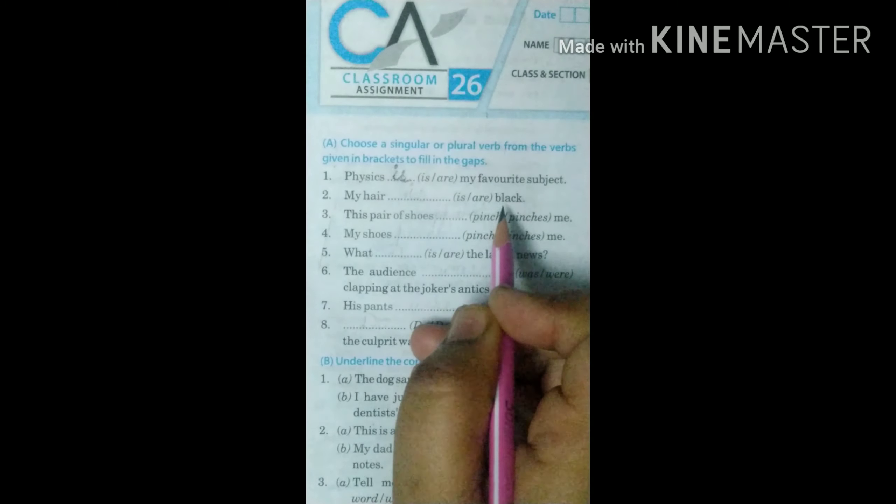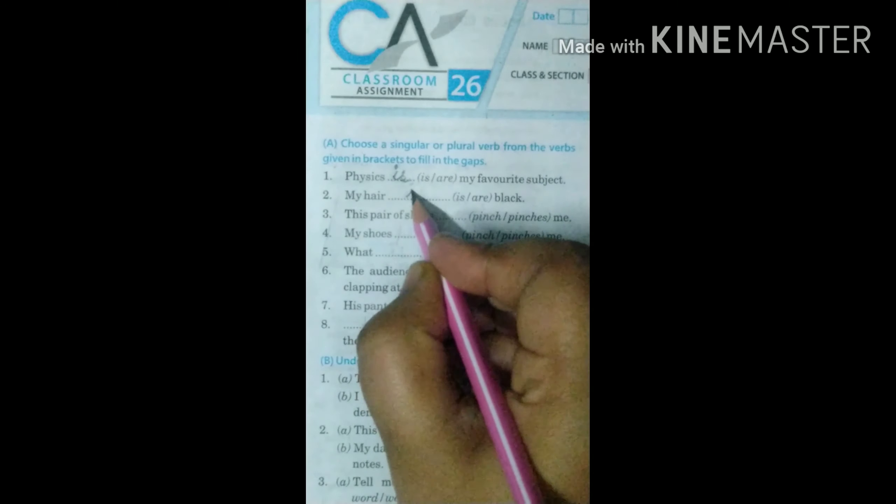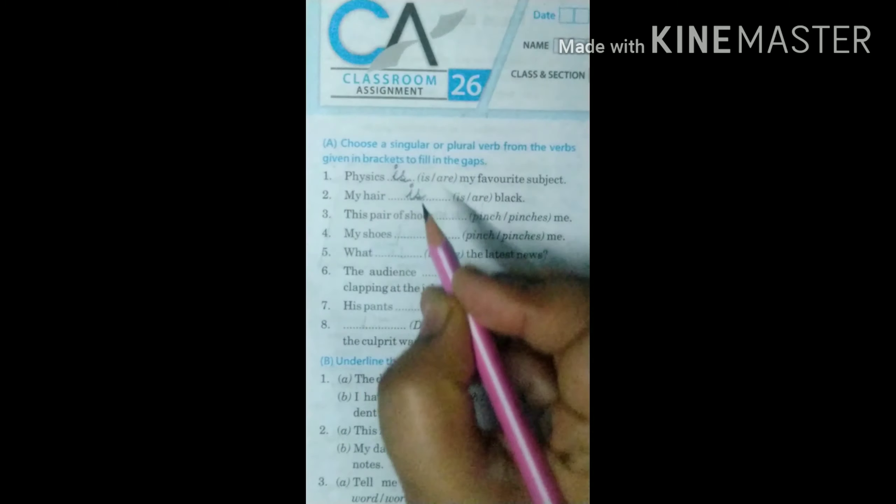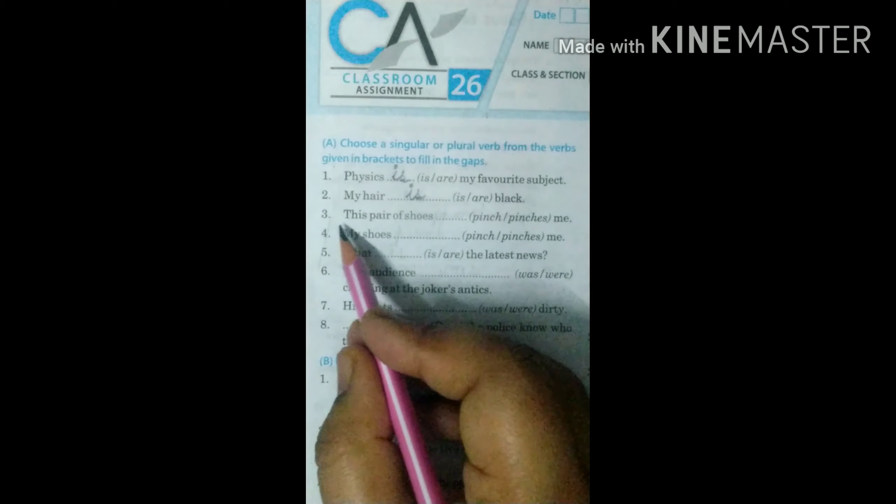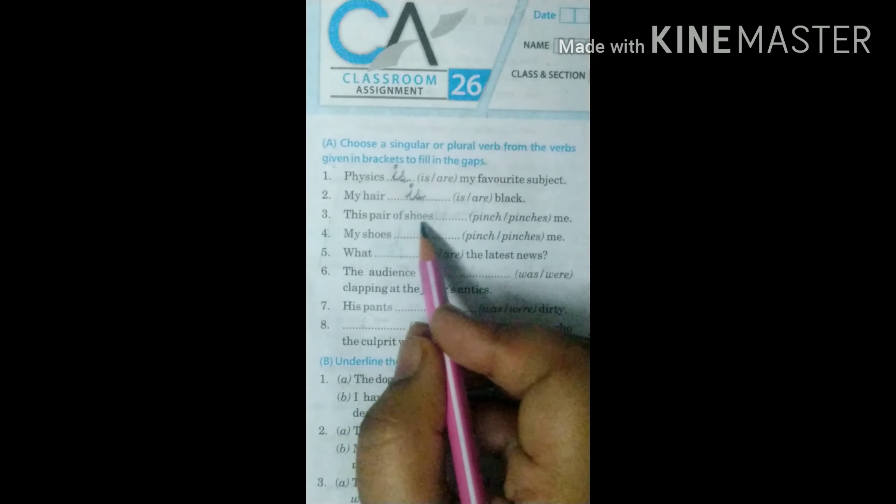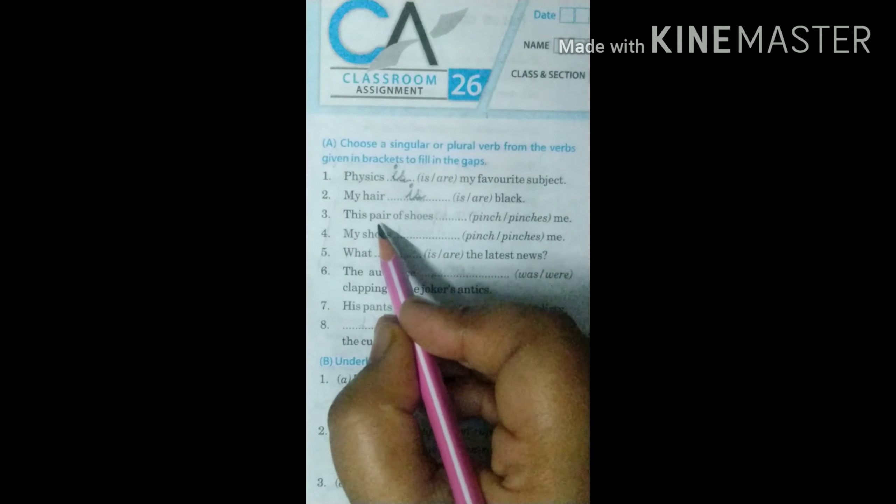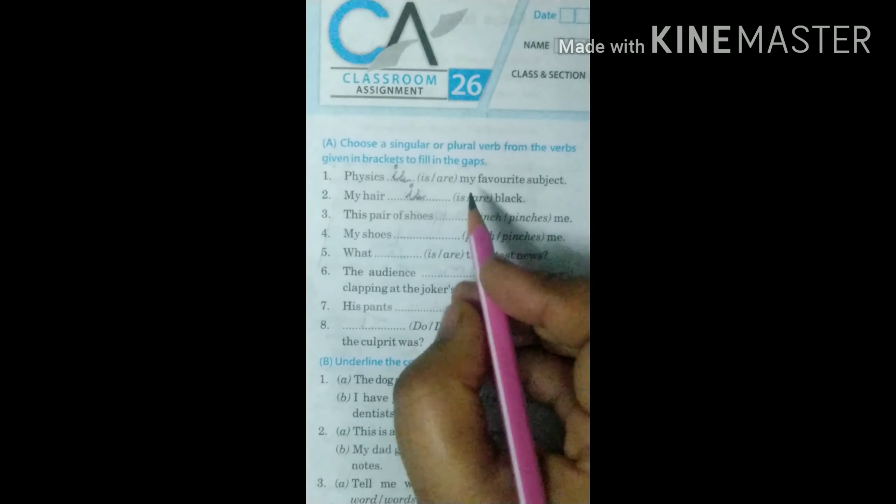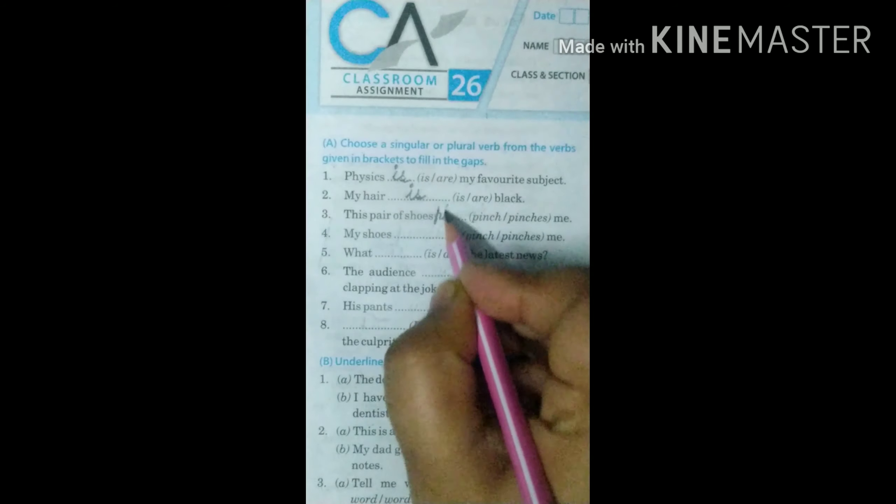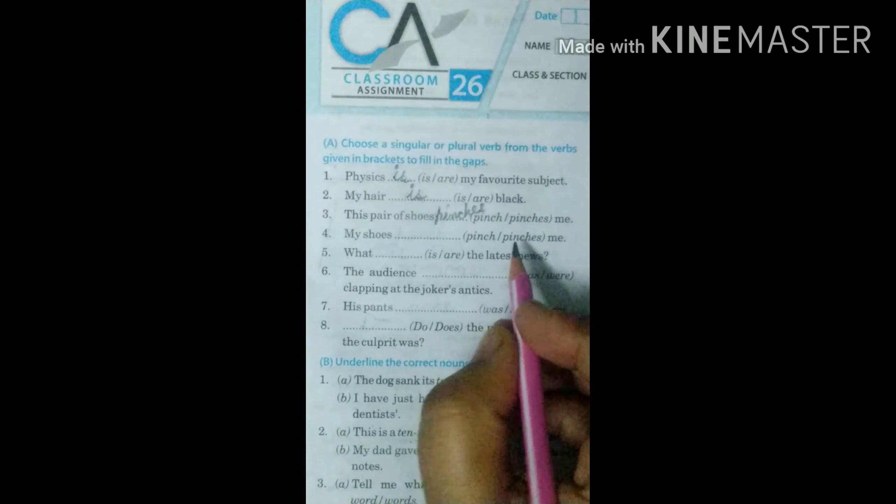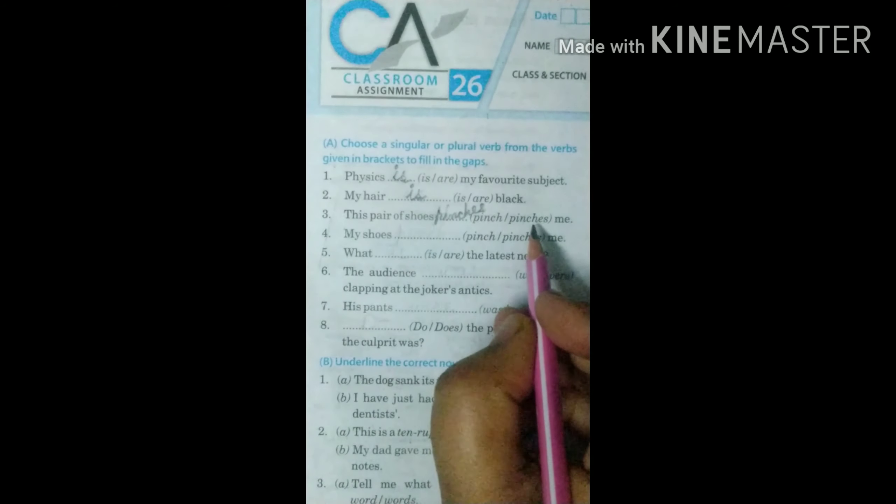My hair dash black. My hair is black. We consider it as a singular term. Third is this pair of shoes. Whenever we use the word pair with shoes, like a pair of shoes or pair of trousers, so we consider it singular. So what will be here? Pinches. With singular we use first form plus s or es.